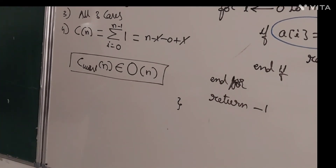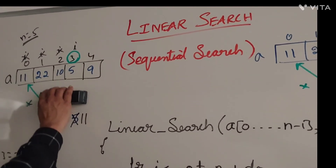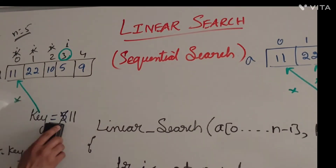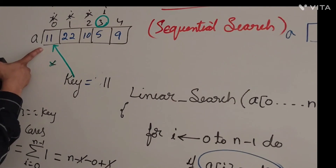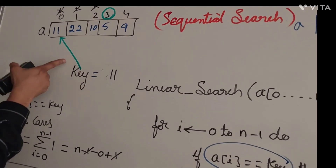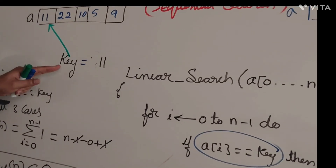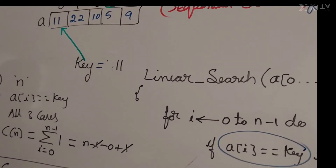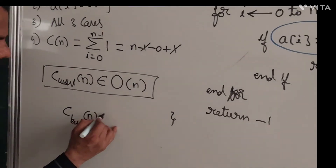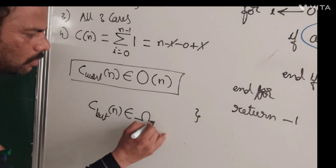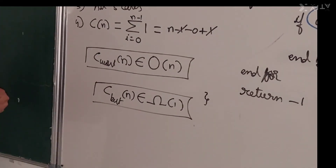The best case occurs when the key element is found at the very first position. If the key element equals a[0], we perform the comparison only one time — no need to continue. So at best case, the comparison operation executes only once. C_best(n) equals one. This is the time complexity for the best case.